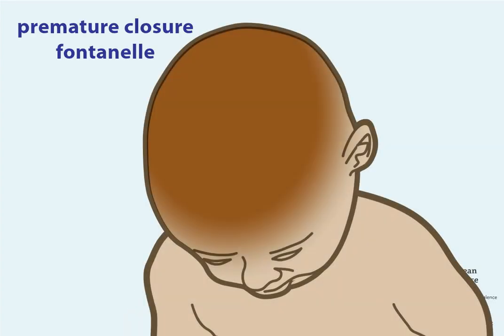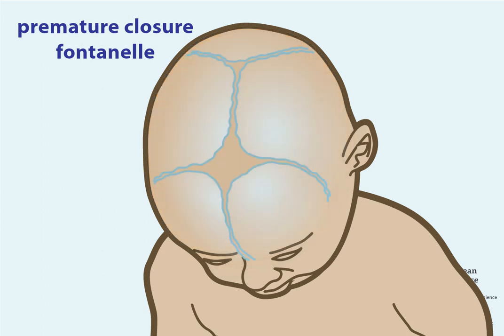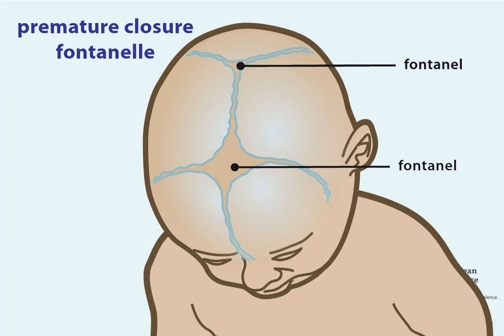Premature closure of the fontanelle. The soft spots or fontanelles of the baby's head vary widely in their size, shape, and timing of closure. Closed fontanelles without any signs of a skull-shaped deformity or palpable ridge are not linked to craniosynostosis.